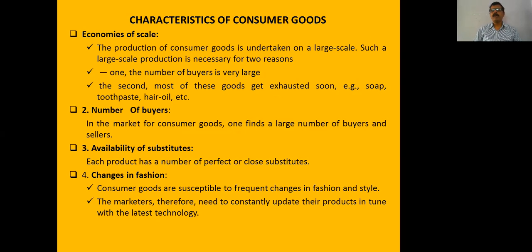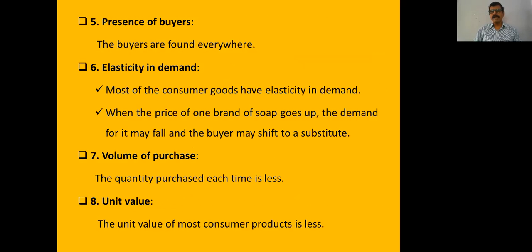Next is availability of suppliers — each product has a number of suppliers. Then there is change in fashion, meaning there will be a change in trend every day regarding consumer products. The presence of large numbers of buyers makes it a buyer's market. The demand continuously changes because the needs, wants, and trends of consumers continuously change.